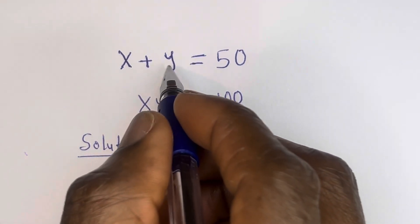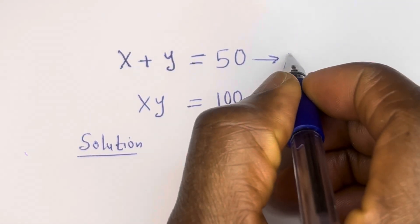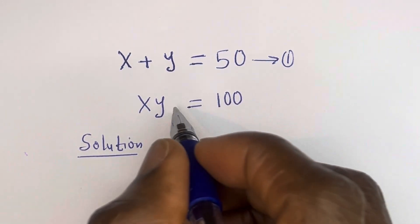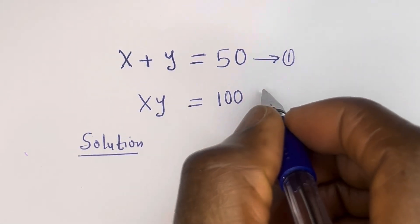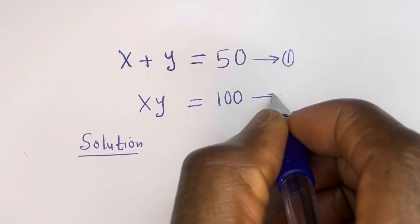x plus y is equal to 50 — let's call this equation 1. x times y is equal to 100 — let's call this equation 2.